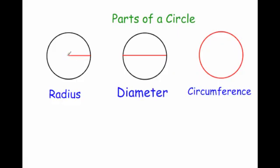So here we've got the radius. The radius is a line which goes from the center of the circle to any point on the circle itself. As you can see here, this red line would be the radius. It's half the way across the circle.